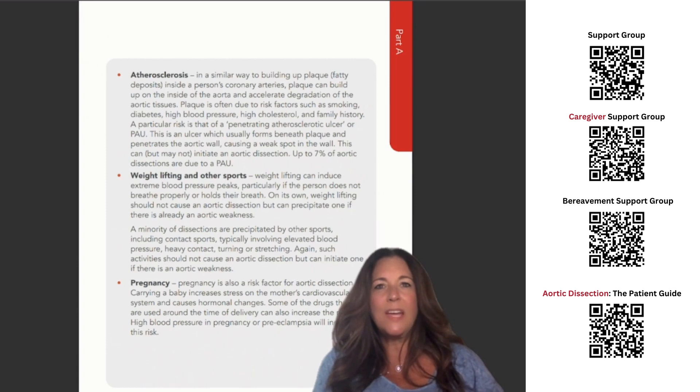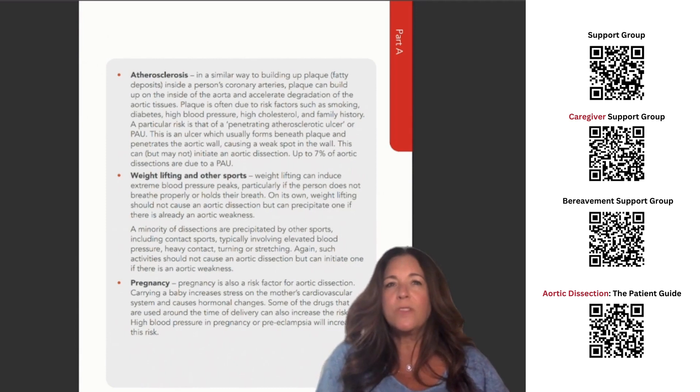A particular risk is that of a penetrating atherosclerotic ulcer, or PAU. This is an ulcer which usually forms beneath plaque and penetrates the aortic wall, causing a weak spot in the wall. This can, but may not, initiate an aortic dissection. Up to 7% of aortic dissections are due to a PAU.